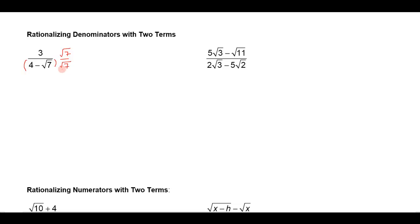But notice that if I multiply by just the square root of 7 over the square root of 7, you have to multiply it by the whole denominator. So that's going to give you 4 square roots of 7 minus 7. So you got rid of the radical here, but you shifted it over to the 4, and you still didn't get rid of it in the denominator. So that's not going to work.